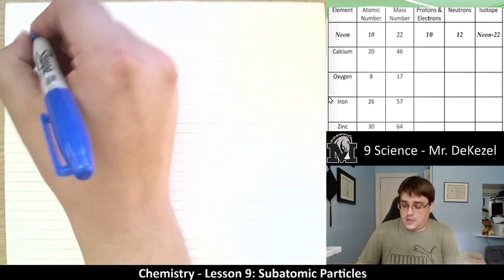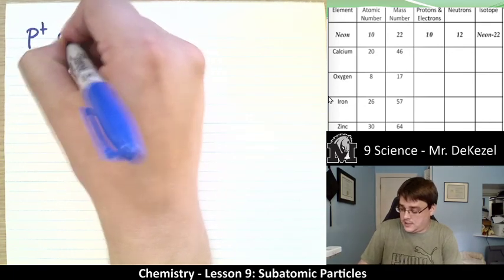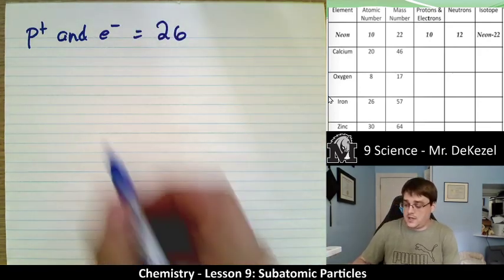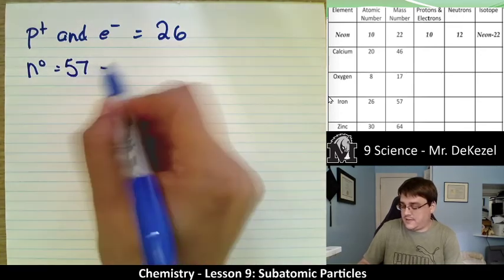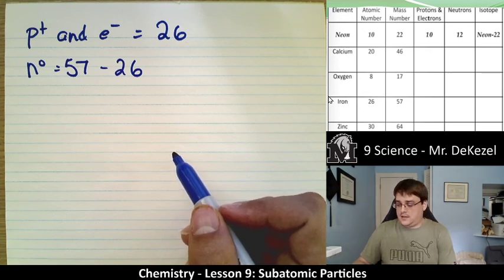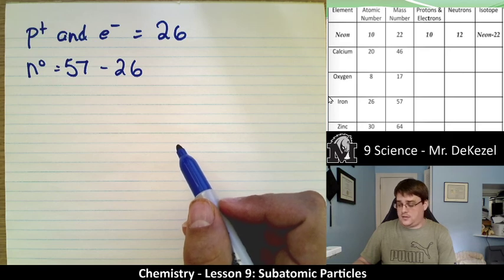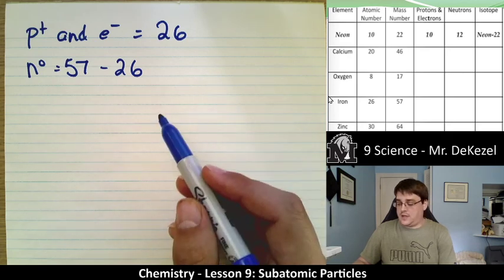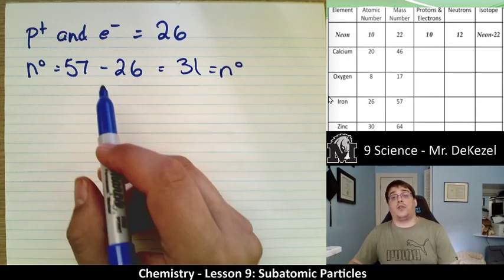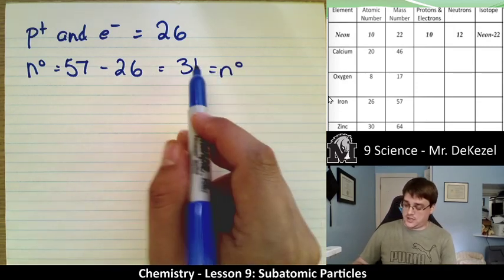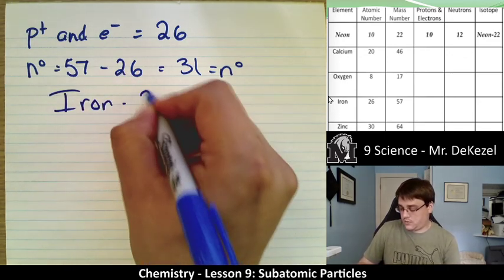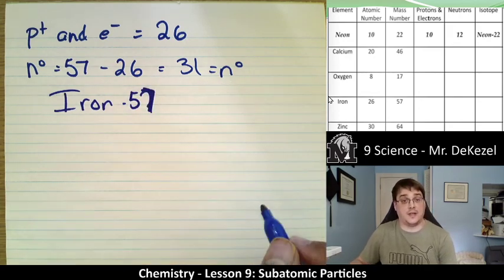Let's do iron. Iron has 26 protons and 26 electrons because its atomic number is 26. Its mass number is 57. 57 minus 26 equals 31 neutrons. So this iron atom has 31 neutrons, 26 protons, and 26 electrons. We write it as the isotope Iron-57.